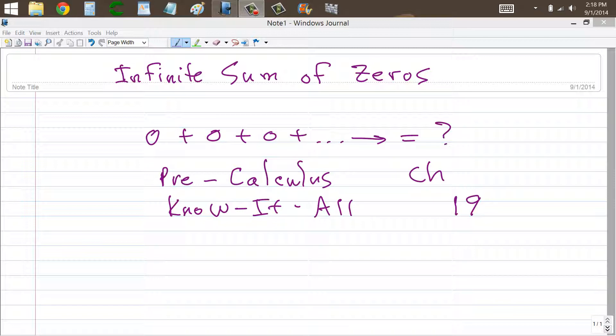Stan Gibilisco here with a little discussion of what appears to be a mistake in my book Pre-Calculus Know-It-All in Chapter 19, where I discuss an infinitely long sum of zeros and make the claim that that sum is undefined.